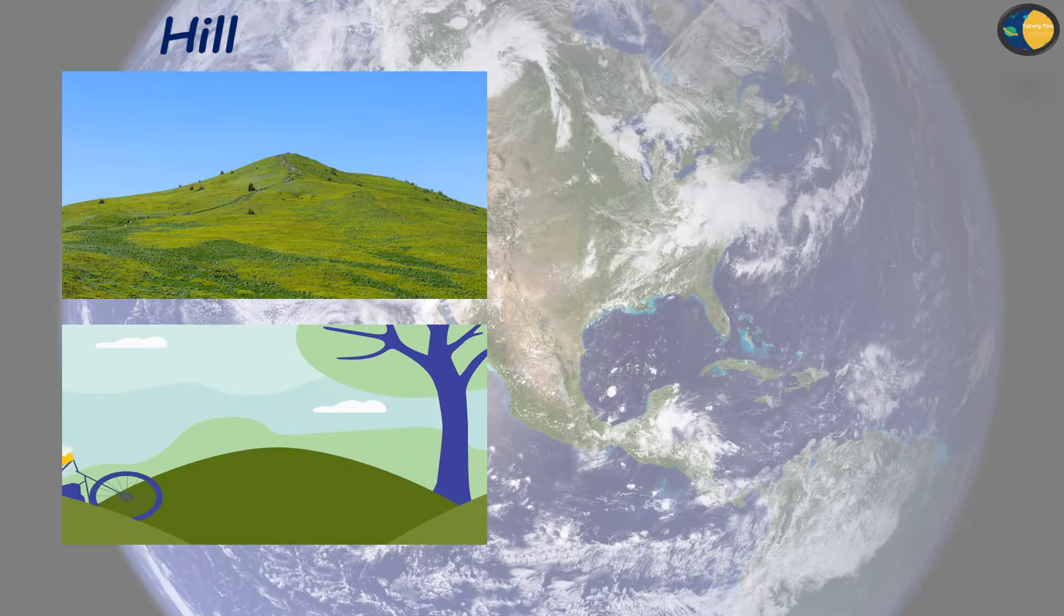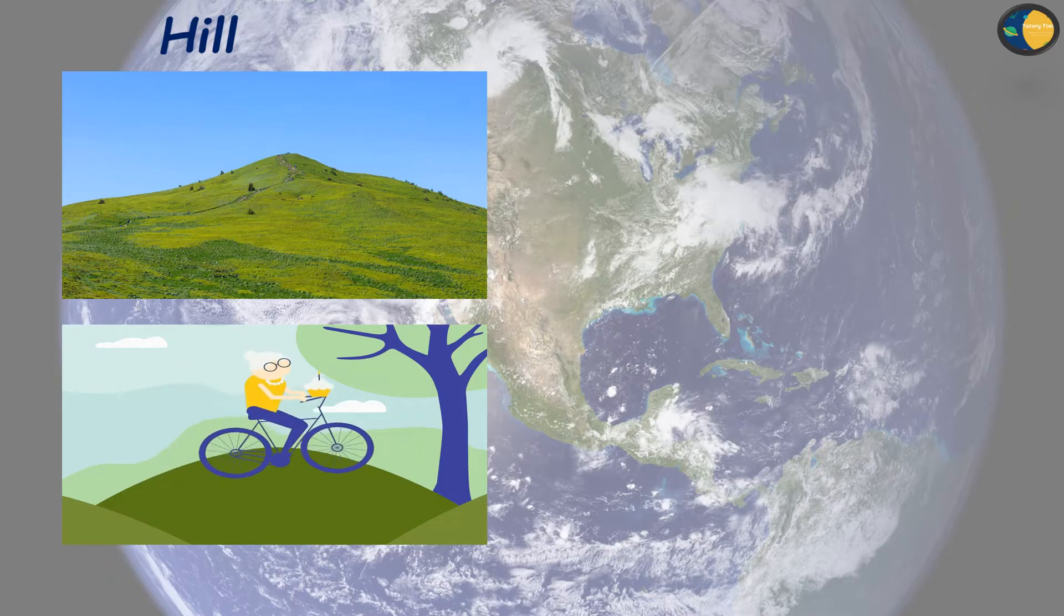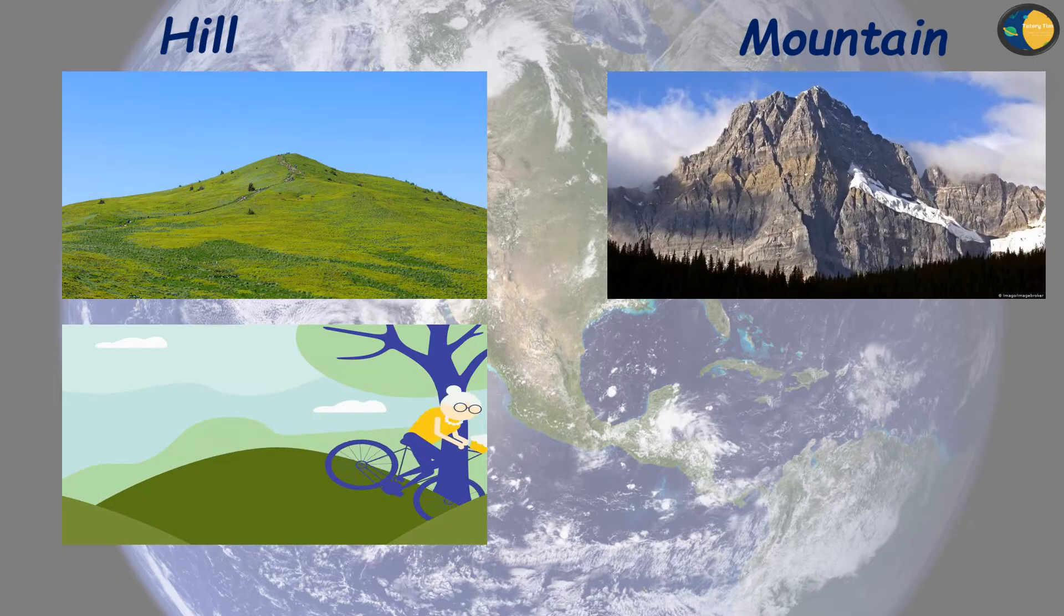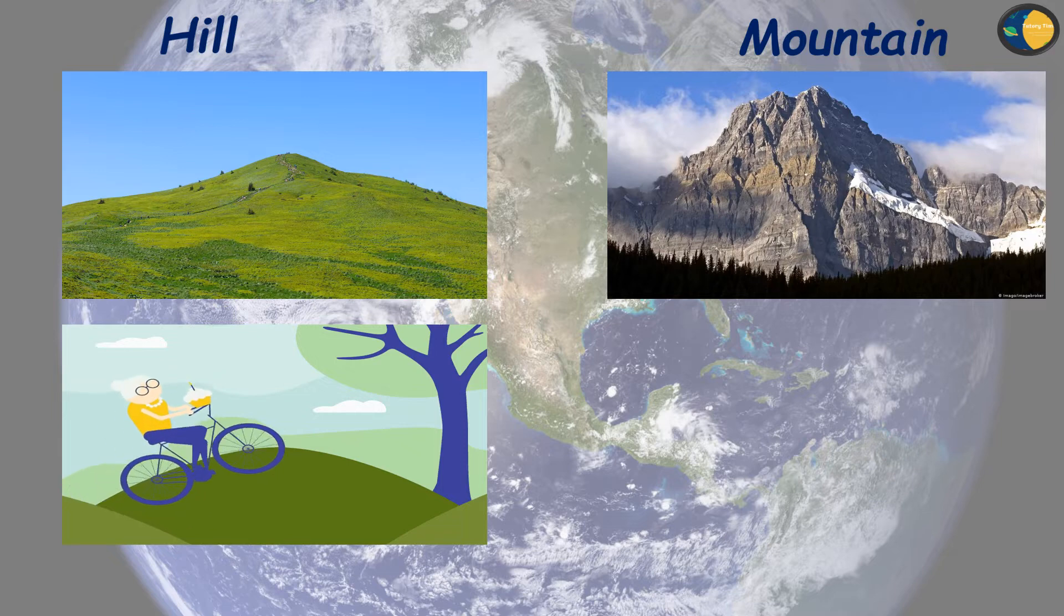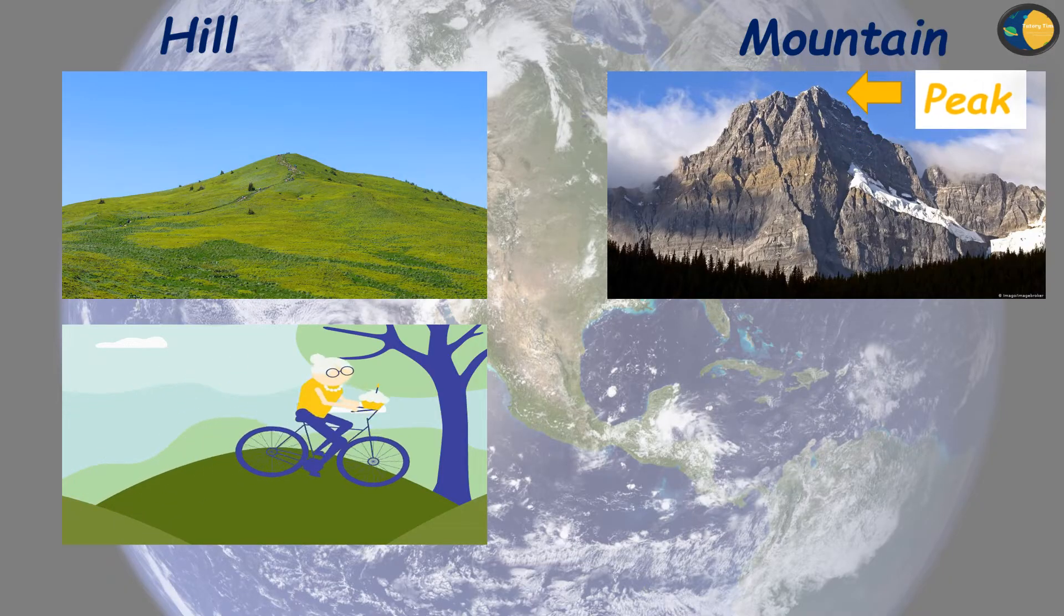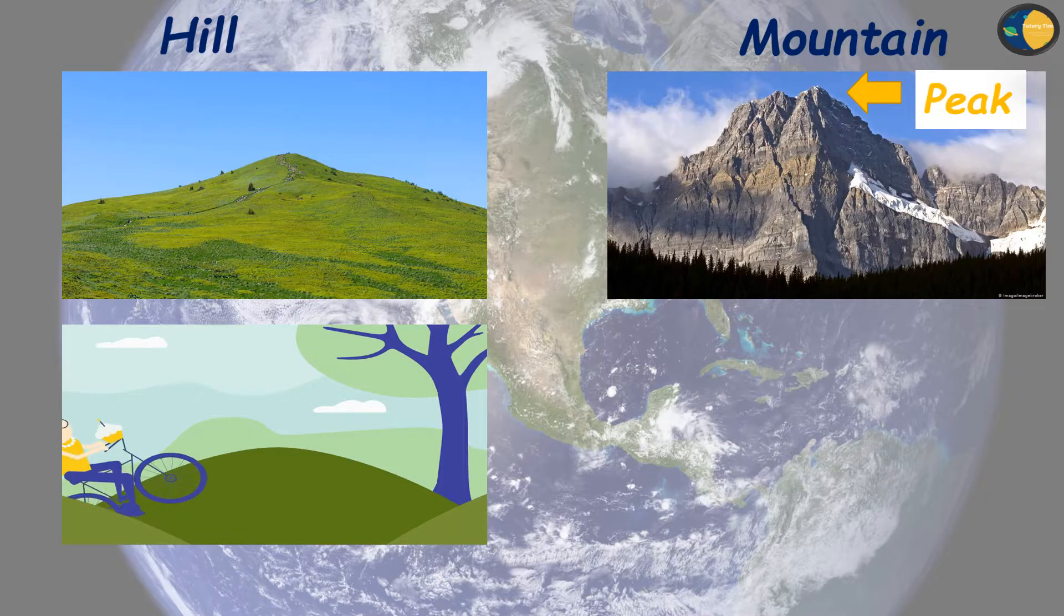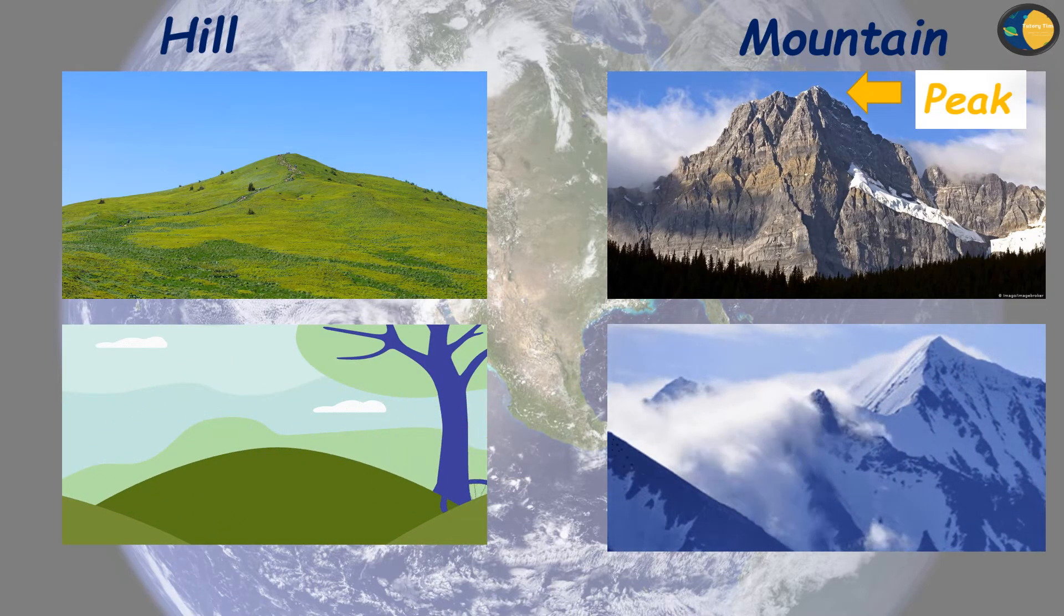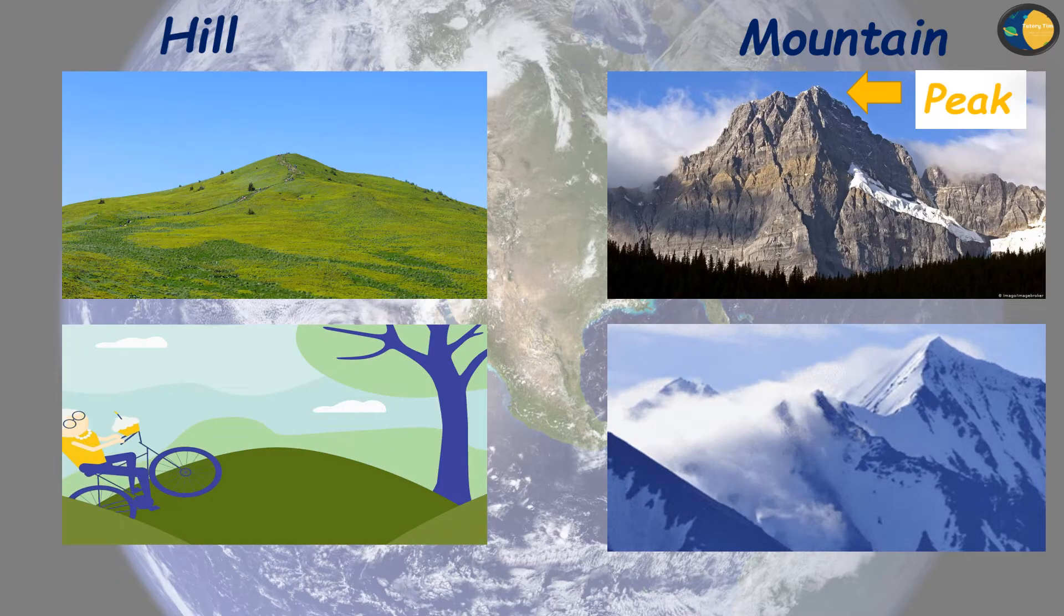Next we have is mountain. Mountain is a raised part of the Earth's surface much larger than a hill. The top of a mountain is called its peak. The peaks of very high mountains are covered with snow. Many rivers are formed when the snow on these mountains melts.